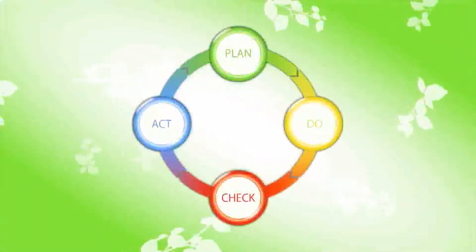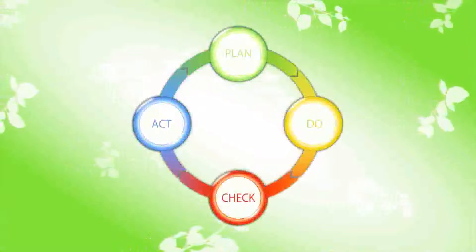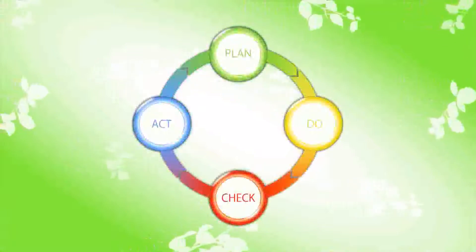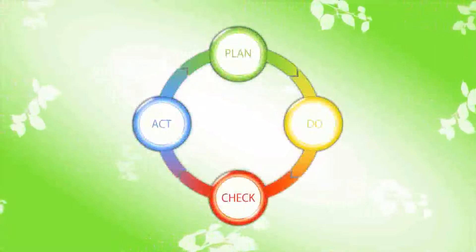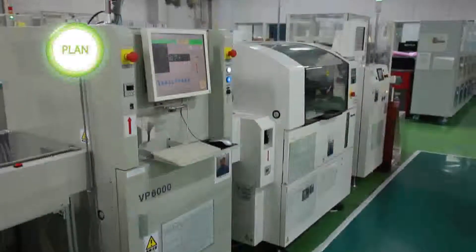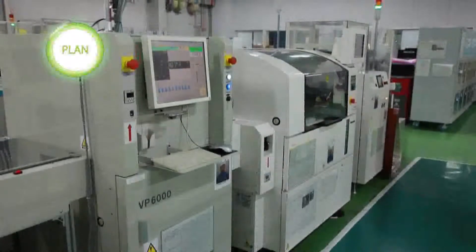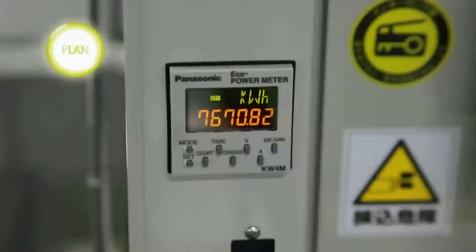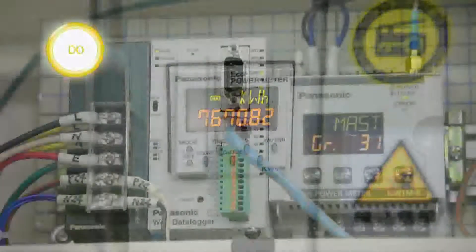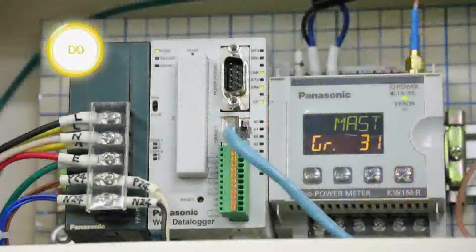The PDCA cycle is a key for energy saving. P is for Plan — you narrow down the targets to be saved of energy. D is for Do — you measure energy consumption with eco power meters and collect the data in the data log unit.